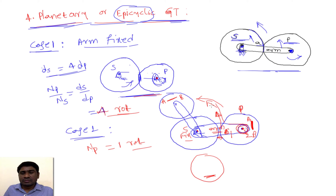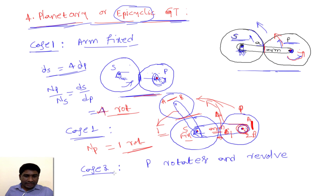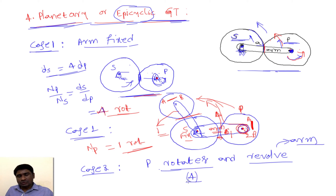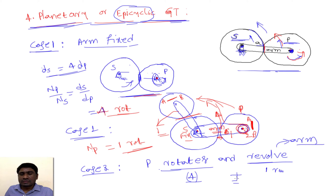Because it is simply revolving but not rotating, since there is no contact between these two gears. In Case 3, P rotates as well as revolves — it revolves because of the arm, and it rotates because there is contact between S and P. Because of its self-rotation around the center, the shaft is making four rotations. And because of the arm revolution around the sun, it is making one additional rotation.